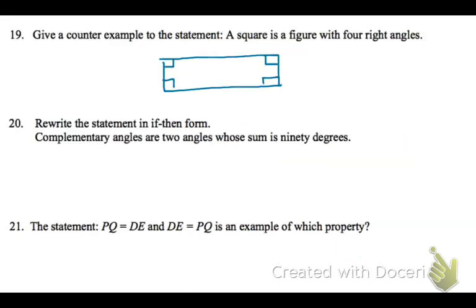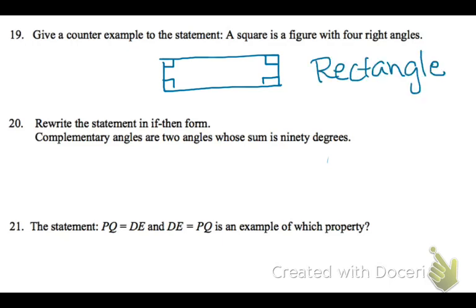Again, a counterexample is just an example showing that it's not true — just because it has four right angles doesn't mean it has to be a square, so it can be a rectangle. So you can draw a picture example, or just state that it could be a rectangle.